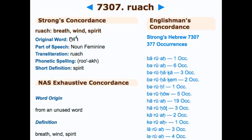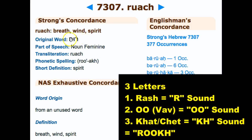Here's a practical application: the word Ruk from Strong's H7307 has three letters — the first is the Rash, the second is a U or what they commonly call the Vav, and the third is the Kat or what they commonly call the Chet. It means breath, wind, or spirit. We have the Rash making the R sound, the U making the U sound, and the Kat — when we put it together it just makes Ruk. They added vowel points to get 'Ruach,' but when you actually put it together you just get Ruk. See how simple this really is.